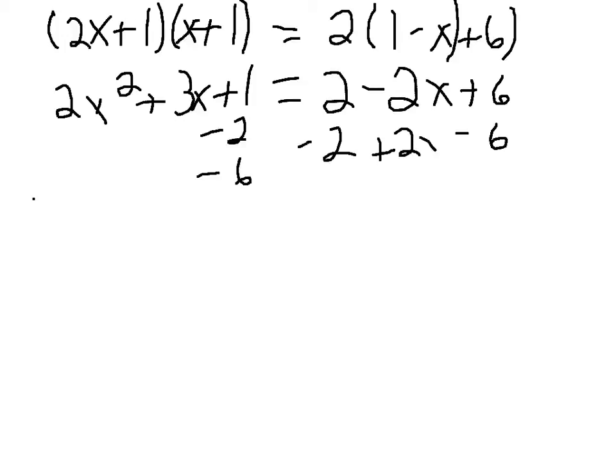And I add 2x to both sides. And so then your new equation would be 2x squared plus 5x minus 7 equals 0.